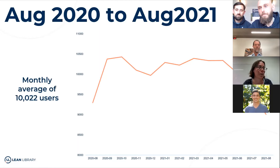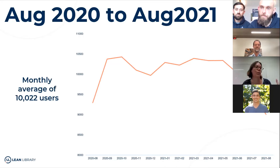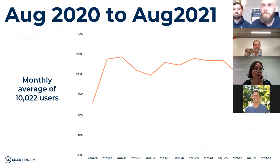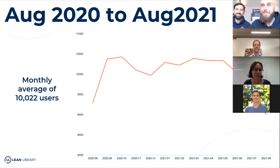When looking at the statistics, I thought — what happened last year in March when we all had to work from home? We gained about 700 users in the month of March. So we already had a very high number of users before we went remote, and then it kept climbing.